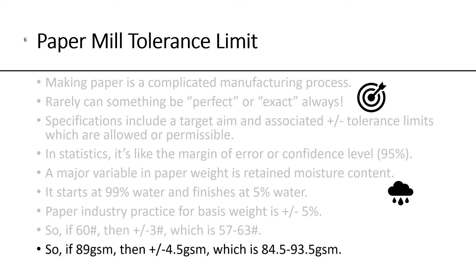If 89 grams per square meter, 5% of 89 grams per square meter is 4.5 grams, which means the tolerance limit on grammage would be somewhere between 84.5 to 93.5 grams.